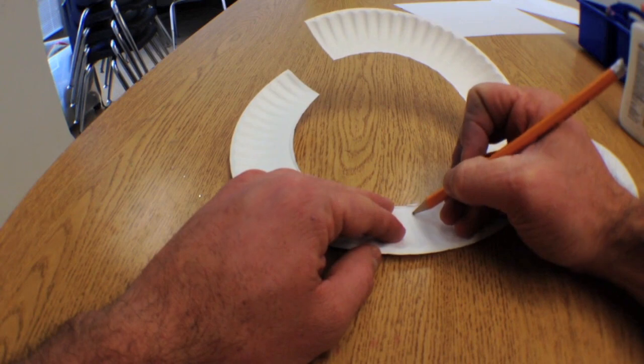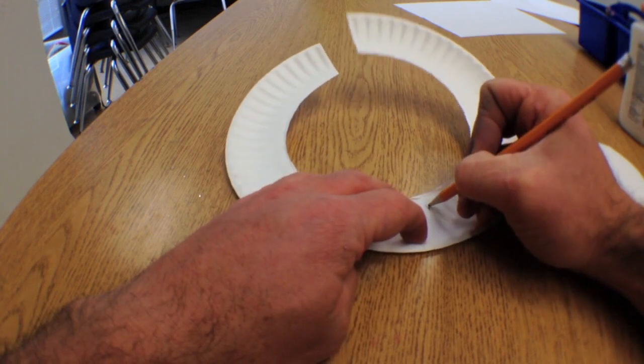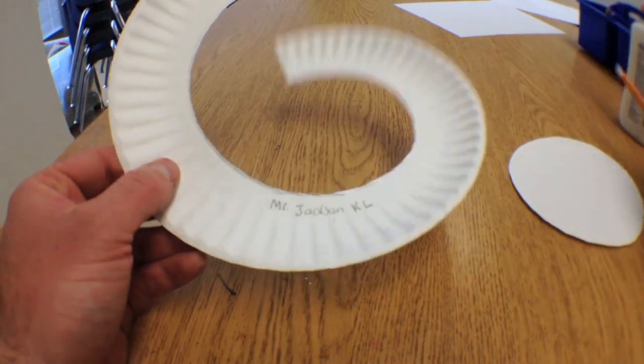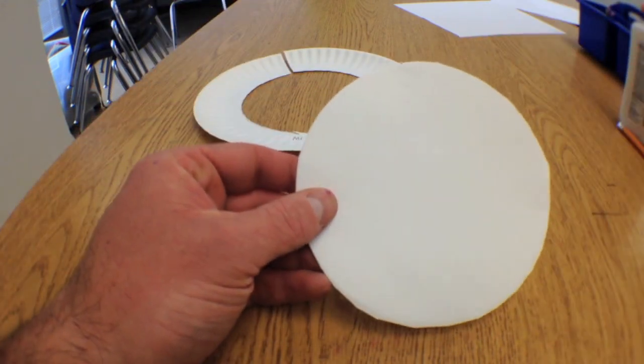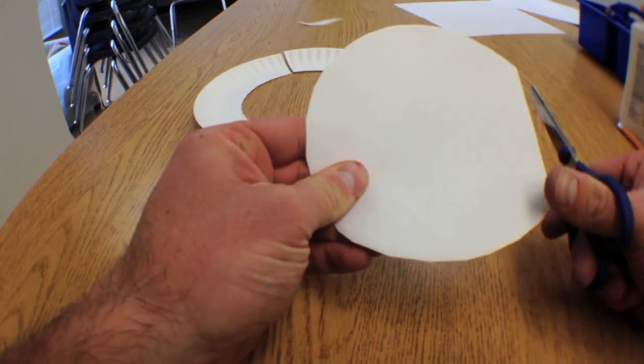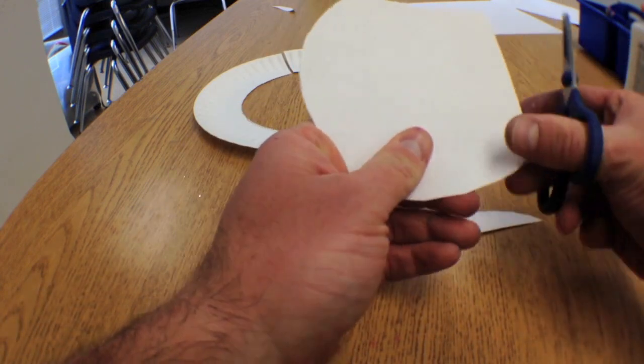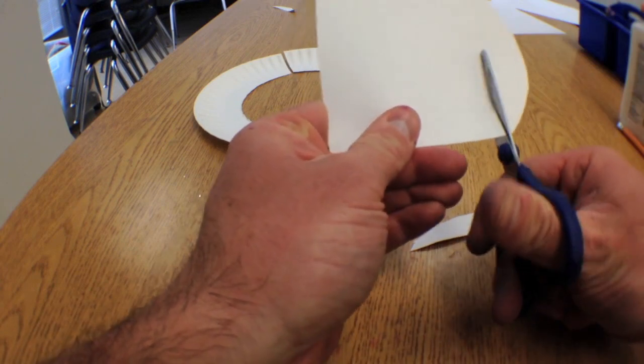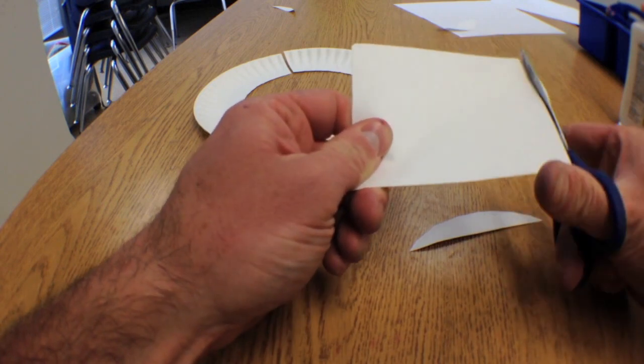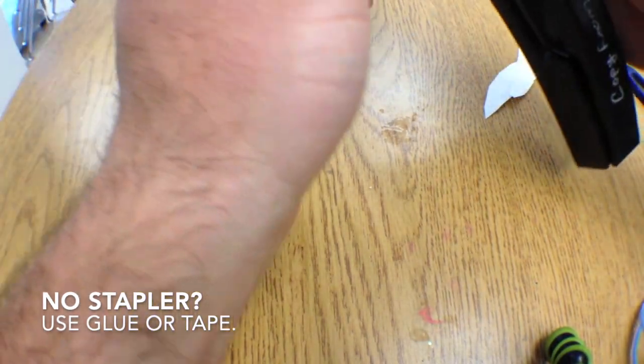Now it's time to write your name and your class on there. The extra circle that came out of the center of the plate, you're going to just trim off the edges until you have a rectangle. Make sure you recycle the extra paper that gets cut off. But now I've got a rectangle and I'll put two staples in it.